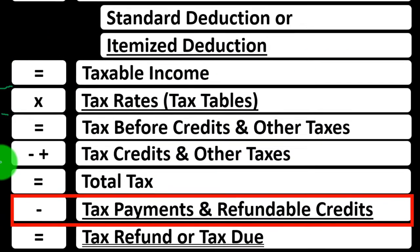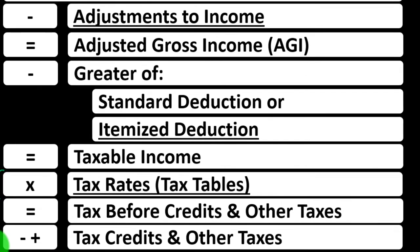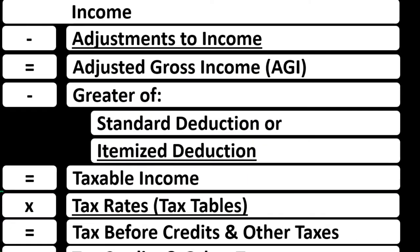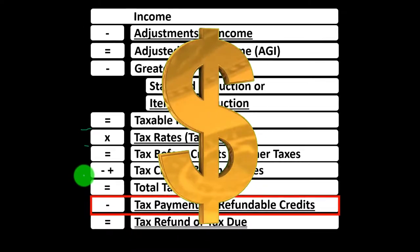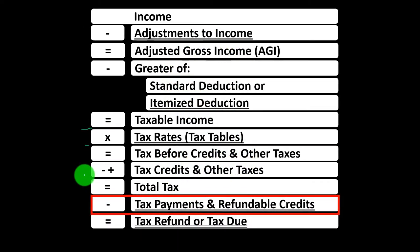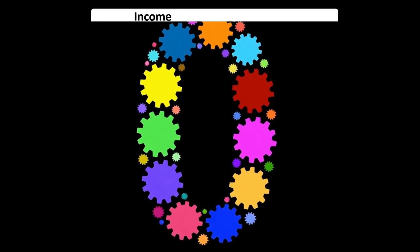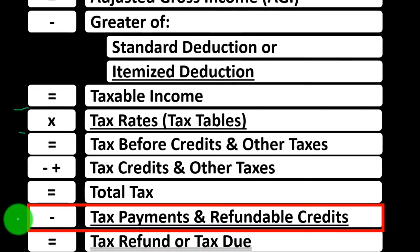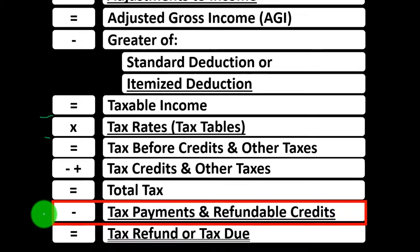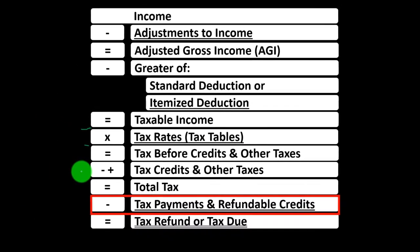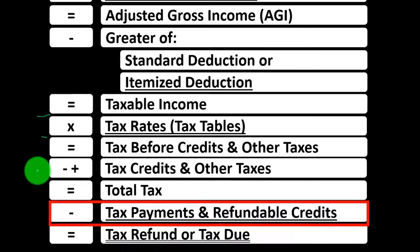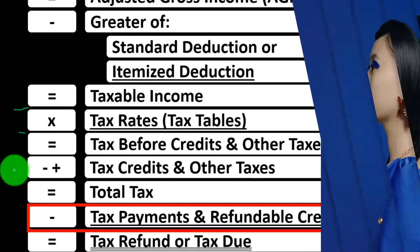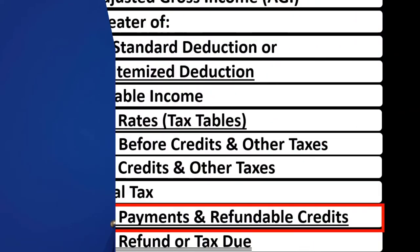Credits get a bit confusing because we have refundable and non-refundable credits. If it's non-refundable, we won't get that dollar credit if it takes the tax liability below zero — the government won't pay us for that amount. But if it is refundable, they will pay us, just as if we overpaid. That's why we group those separately. The payments area gets complex because there are multiple ways to make payments, and credits get co-mingled since they have a similar function within the income tax formula.